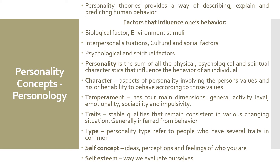Traits are stable qualities that mostly remain consistent in various and changing situations. For example, words like friendly and aggressive refer to traits. When we say that someone is friendly, we mean that person is friendly to most people and that person's friendliness does not change much over time. Traits are generally inferred from behavior — for example, if you see someone at a party talking to strangers, you might infer the person is sociable. A person type refers to people who have several traits in common. It is a way of labeling a person who supposedly shares several key traits with others. For example, if you say someone is the motherly type, you probably mean that person has traits such as being warm, caring, nurturing and protective.